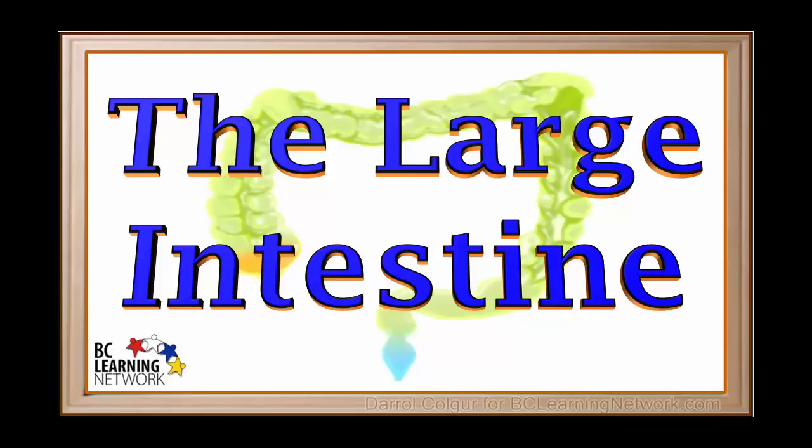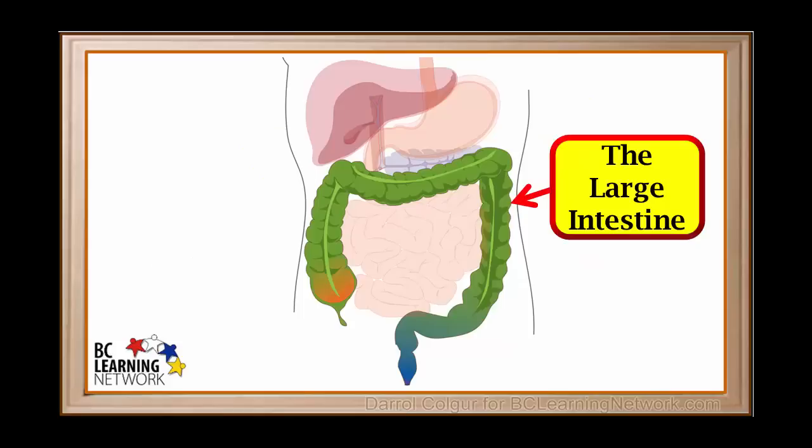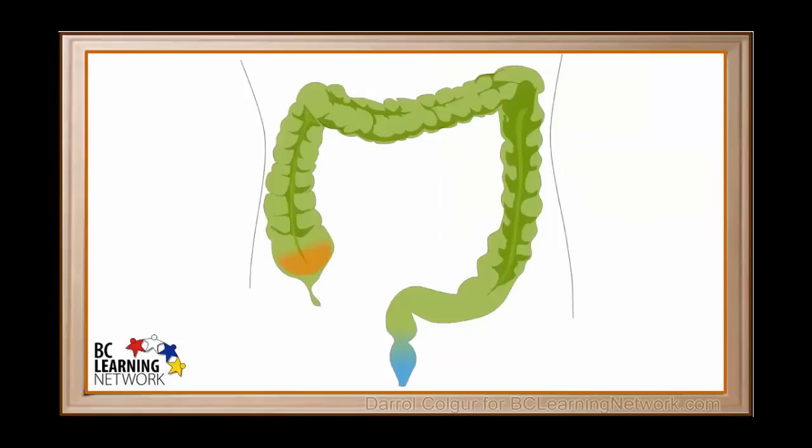The large intestine is the last major portion of the digestive tract. It is located in the lower abdominal region. We can see it surrounds the small intestine. We'll look at the large intestine in more detail.